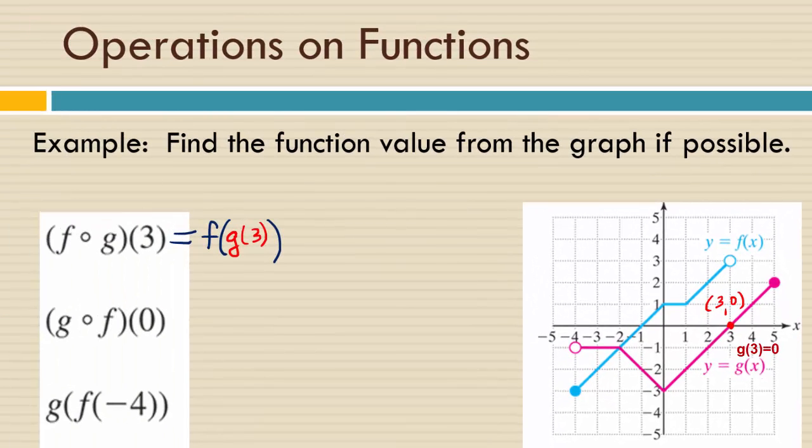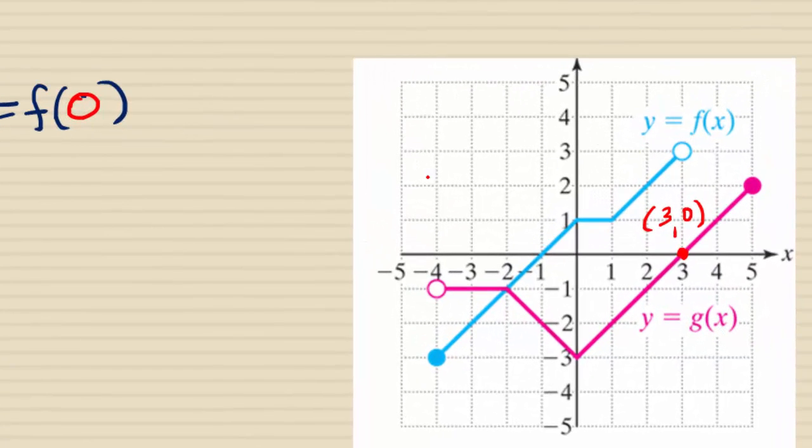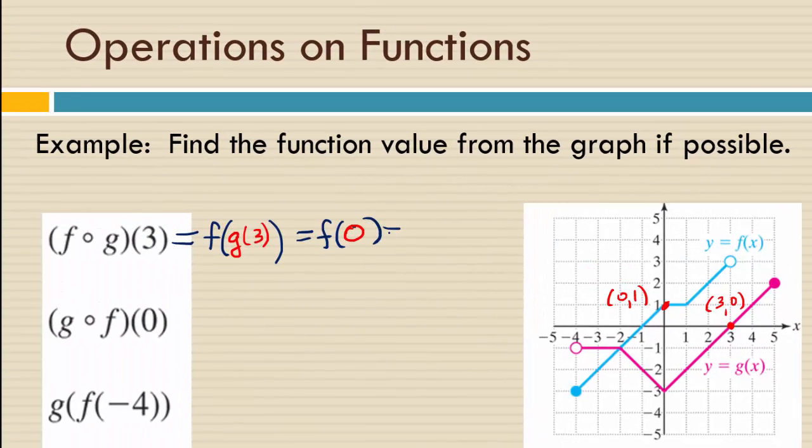So really, we're being asked to plug 0 into our function f. So that means that we have to look for where the function in blue, the f function, has an x value of 0. What's the y value? So 1, yes. 0, 1 is on the function f. So that means f of 0 is actually 1. And we're done.